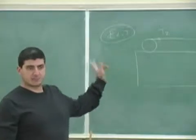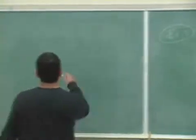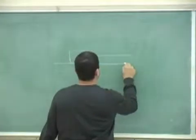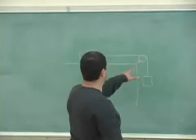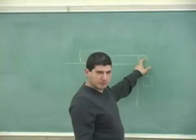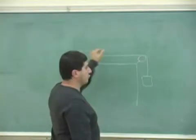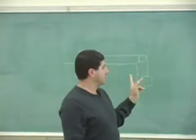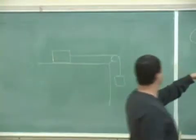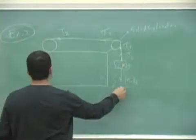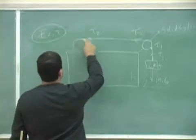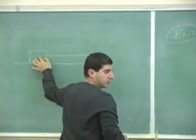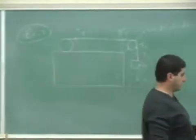We actually did a similar problem back in Chapter 10 when we were doing rotational dynamics — a sphere block setup. The difference here is that now you have the two kilogram block falling (translational motion), the pulley rotating (rotational motion), and then a rolling object which has both rotational and translational motion. That's one extra level of complexity compared to what we did in Chapter 10.